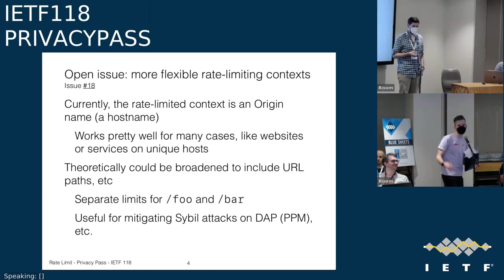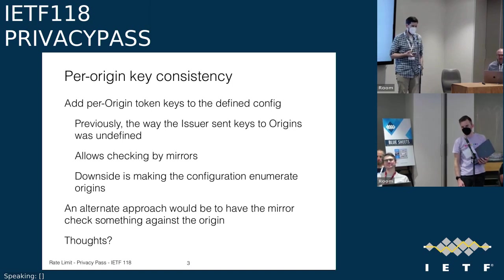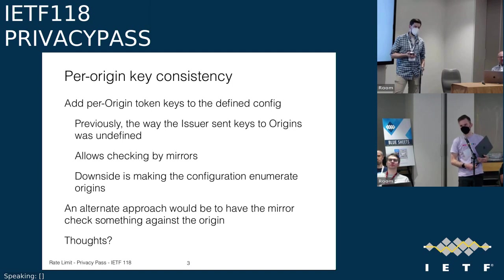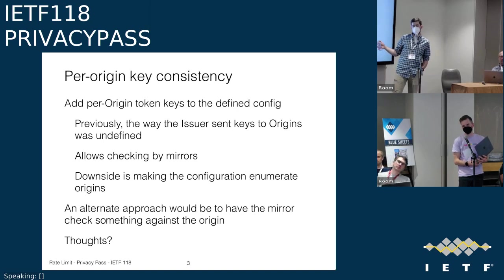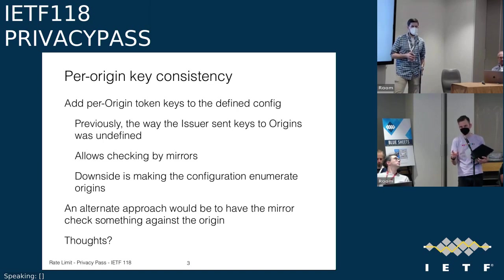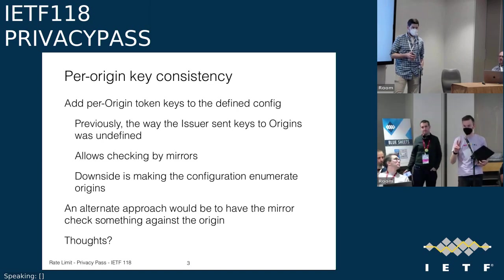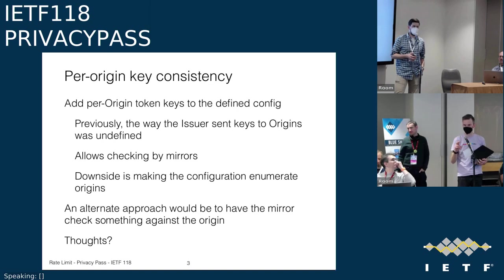Chris: Going back to the other issue — the enumeration of origins — I don't really like this. It would be fantastic if we could avoid it. I'd suggest changing the underlying blind signature scheme to something that is partially blind, to solve not only this problem but also the origin token binding problem that we worked around by having per-origin keys in the first place. That would vastly simplify the consistency issue — then you really only have two keys: the encapsulation key and the one true token key.